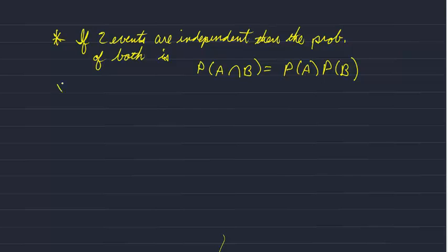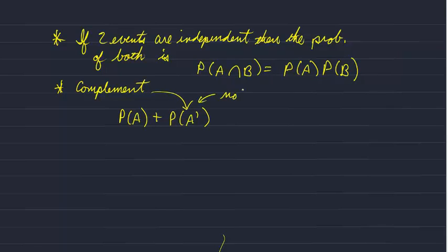There's another symbol meaning complement. If we have probability A, we write the complement as probability of A prime, which means not A. If we sum the probability of A with the probability of everything but A, we get one.